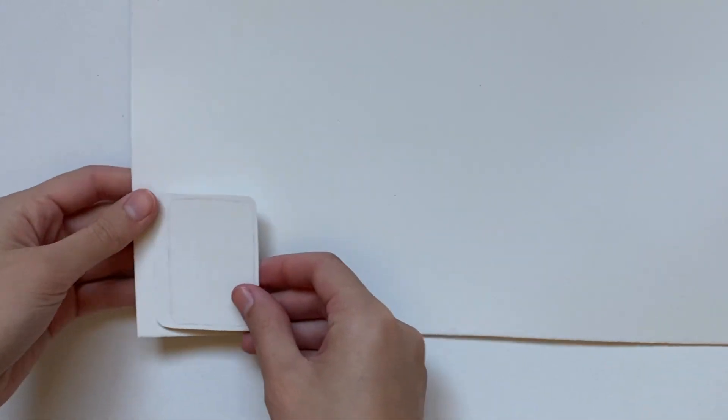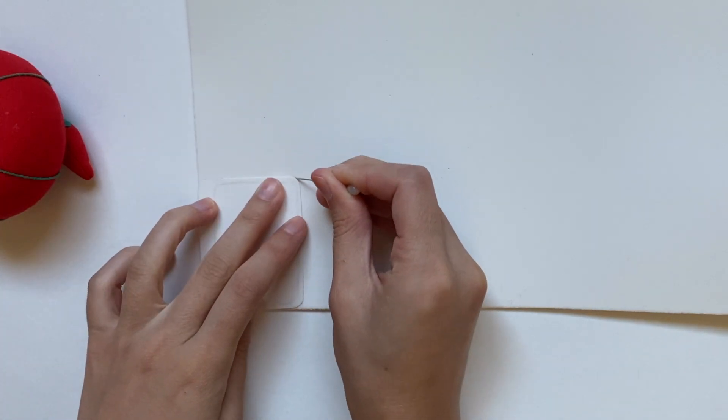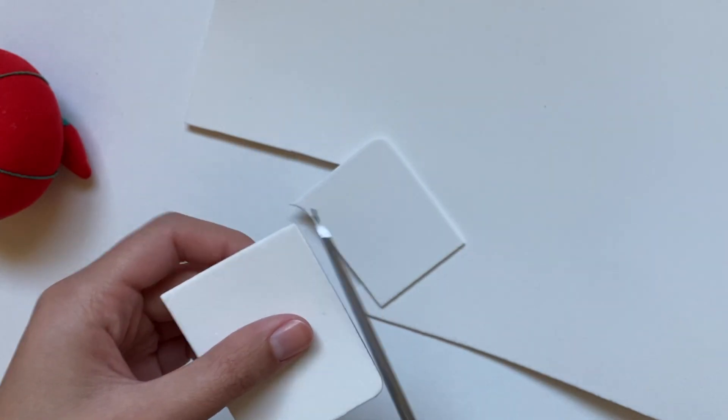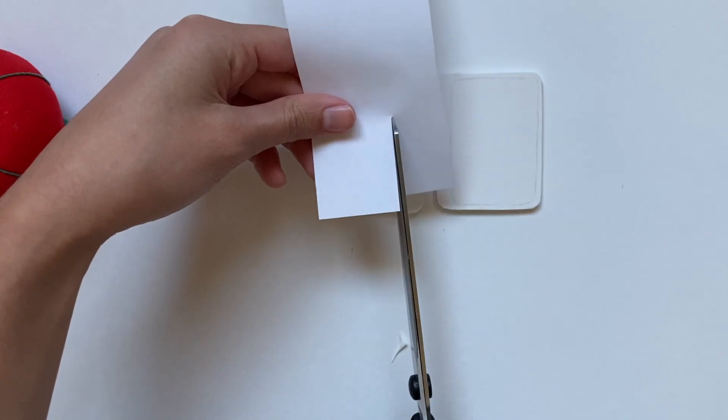Now for the case, I'm going to cut this out of craft foam. So I'm using the paperboard piece as a template and using a pin to kind of score that edge. Then I'm going to trace one more and cut them out.